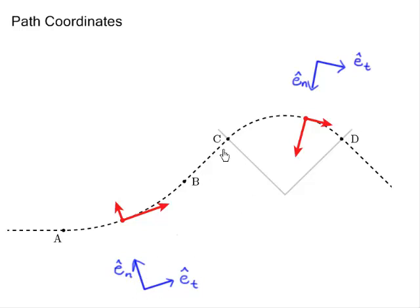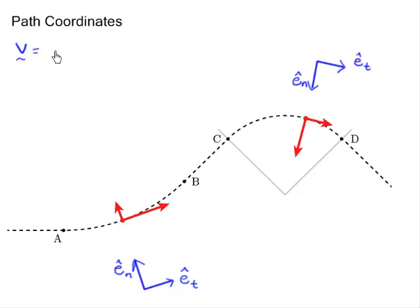These basis vectors change depending upon where you are on the path. If I'm right here on the path, tangent is this way, perpendicular is that way. But as I move along the path, the direction which is tangent changes. The e_hat_n direction always points perpendicular to the path and its positive direction is defined so that it points towards the center of curvature. Velocity in path coordinates is easy — since velocity is always tangent to the path, it's simply v in the e_hat_t direction, where v is the speed in meters per second.